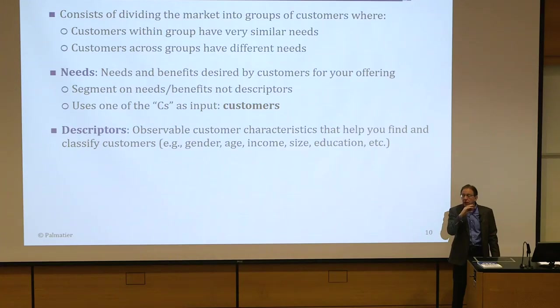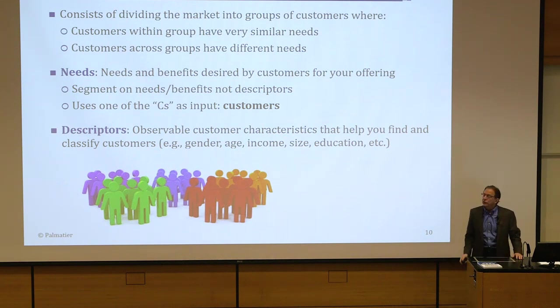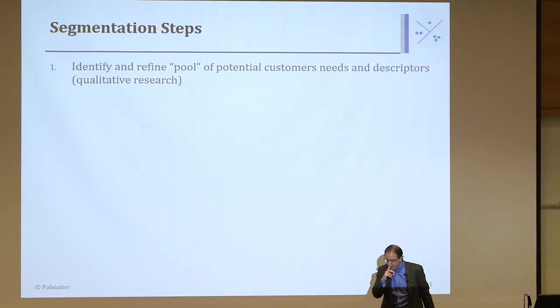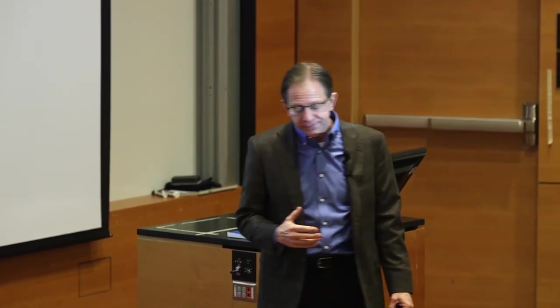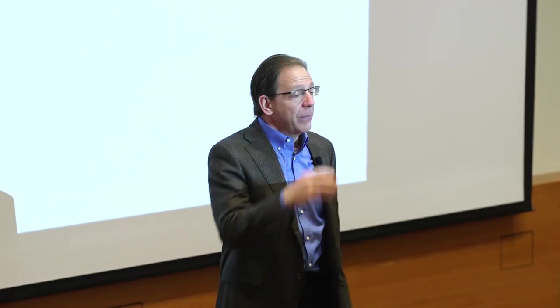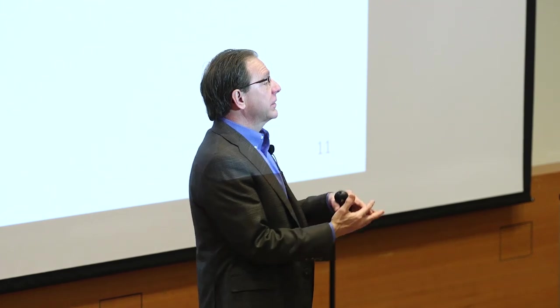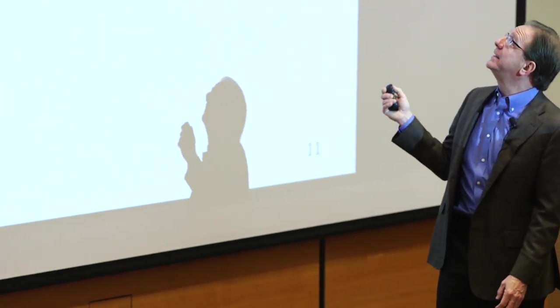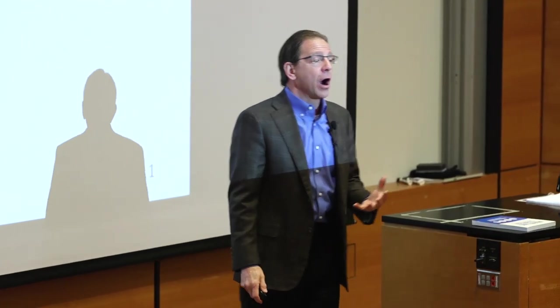We use descriptors after we segment the market and design our product to help find people. So remember: you segment on needs. The steps are: first, identify and refine a pool of potential customers' needs — sometimes you don't even know all the attributes customers use to make a decision, so we do qualitative research, like focus groups or interviews. We get a group of automotive users and ask them what things they look at when deciding to buy a car: size, performance, cost, color, space. We list all those attributes — that's the first step. We want a pool of needs and descriptions, because if we leave out an important one, our analysis will be faulty.